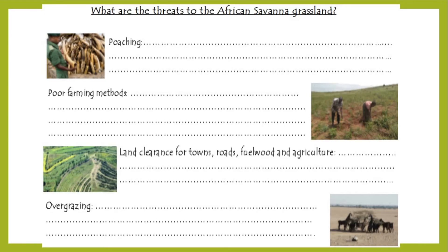Finally, overgrazing. This is very similar to the poor farming methods issue. Livestock aren't fenced in the African savannah — they can wander wherever they like. Goats in particular will eat anything and are very agile — very good climbers. They can get to the very top of trees and eat every last leaf and every last bit of grass off everything they come across.